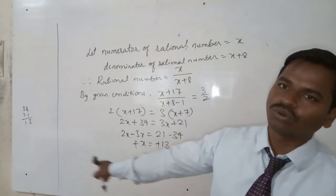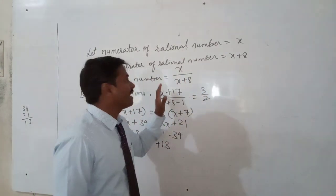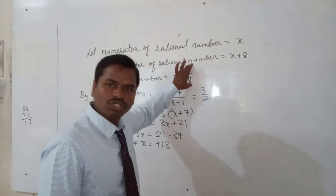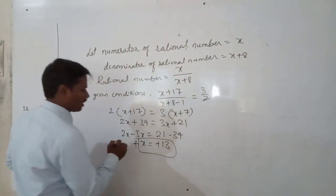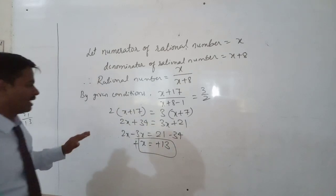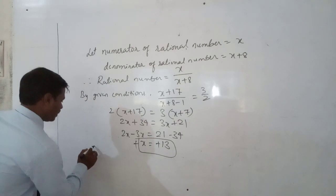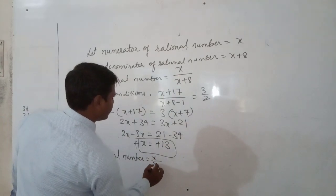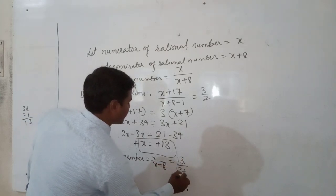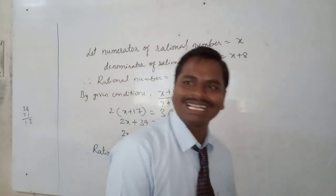Both signs are minus, so multiplying by minus 1 both become plus, giving x equal to 13. That is the x value. Now we should find the rational number — that is, the numerator and denominator. We have got x equal to 13 as the numerator. The denominator is x plus 8, which is 13 plus 8 equals 21. So the rational number is 13 divided by 21.